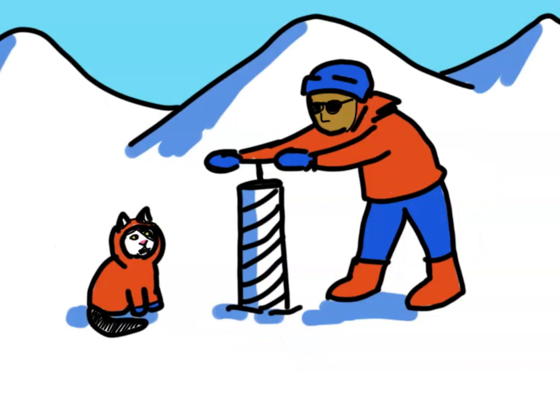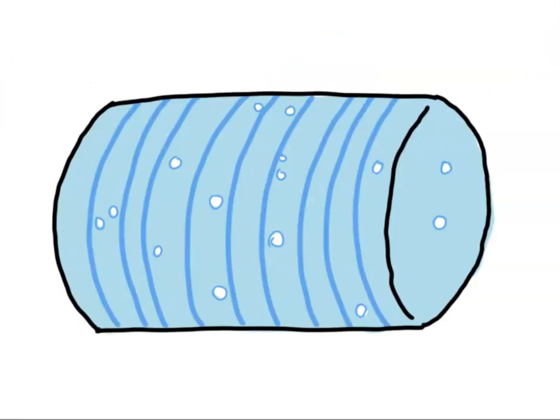Going back farther requires new proxy data. One important source of proxy data is ice cores. Just like trees have rings, the ice sheets in Antarctica and Greenland have built up in annual layers for hundreds of thousands of years. We can use a kind of drill to remove a cylinder of ice, called a core, that we can examine. Each ice layer contains tiny trapped bubbles of air — samples of our Earth's past atmosphere. This gives us a good record of things like greenhouse gas concentrations.